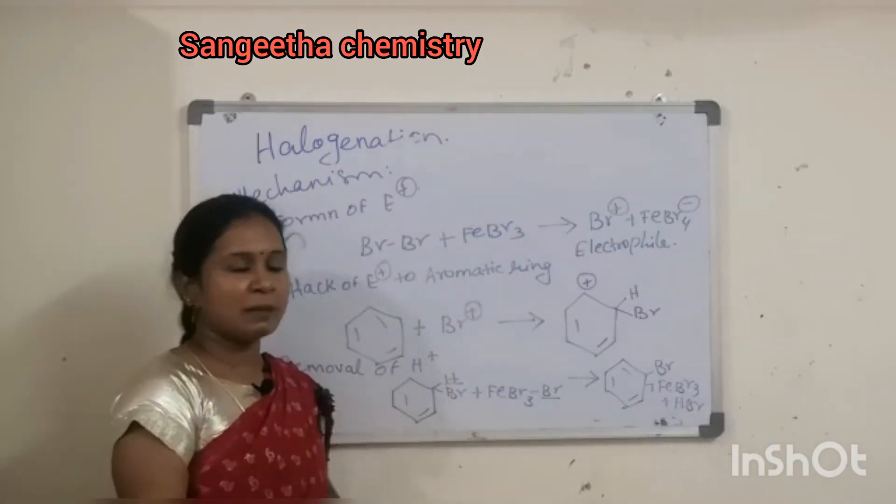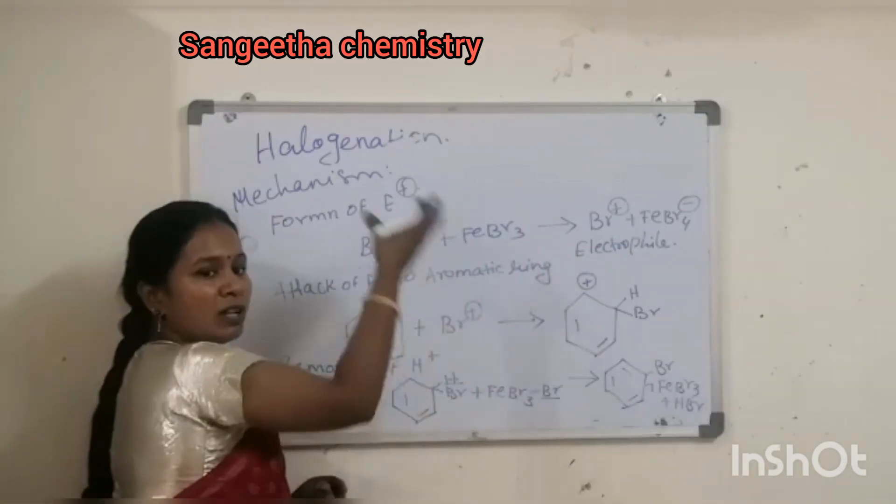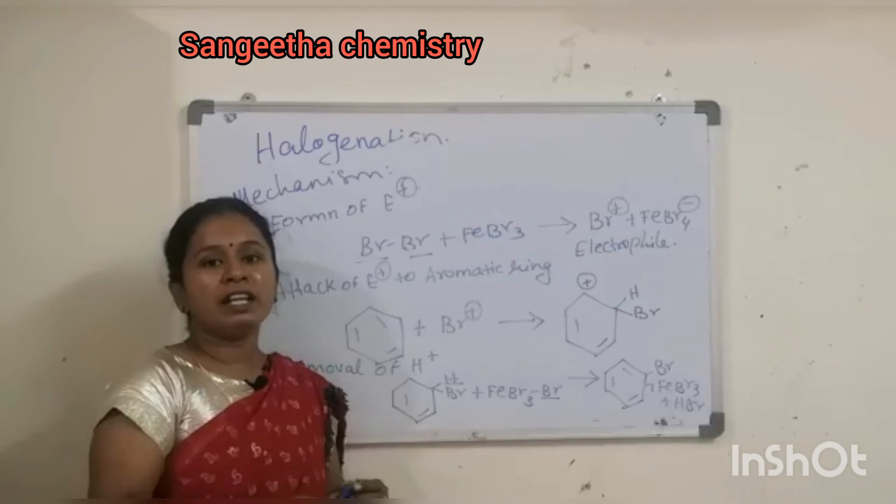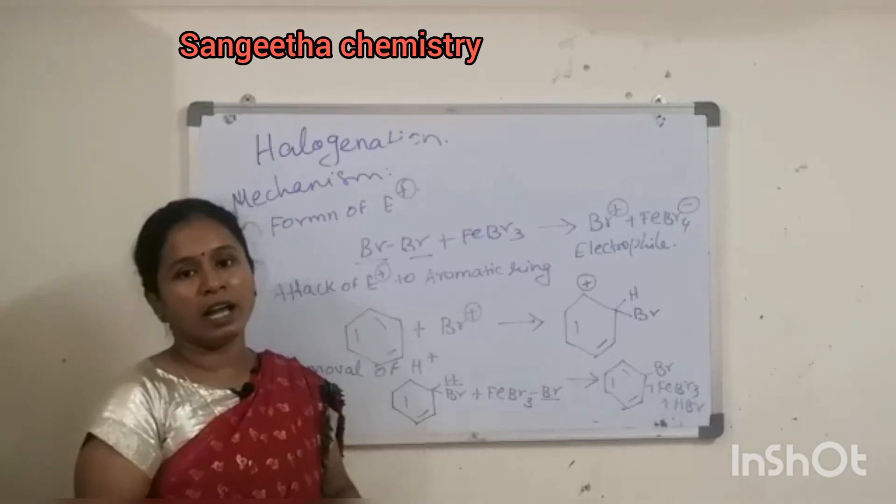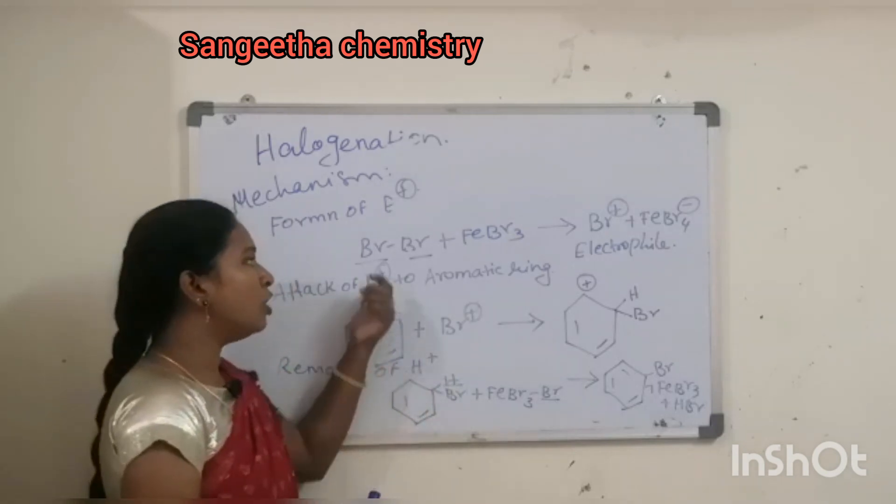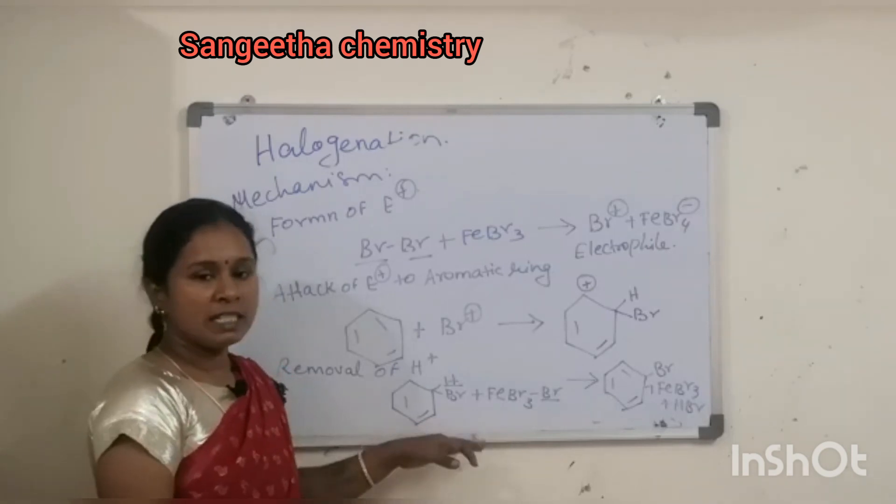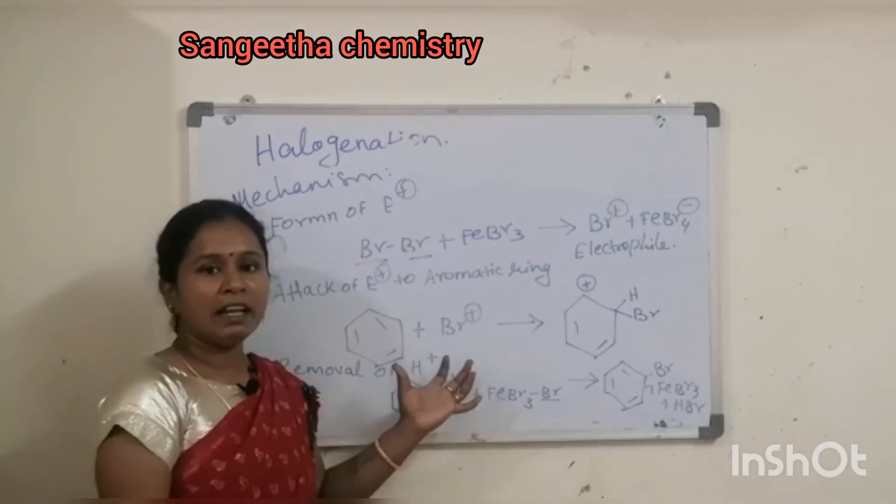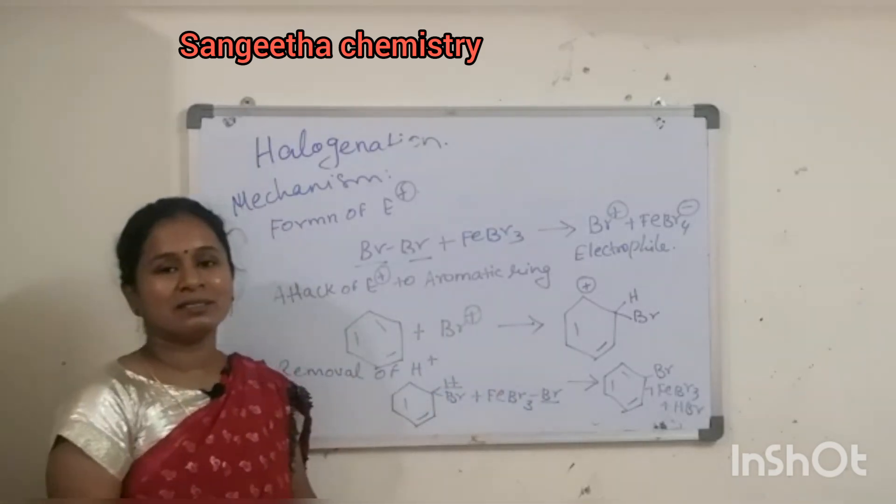Bromobenzene will be formed. This is Chlorine, we use Cl2 and FeCl3, so same mechanism but we have to change Br to Cl. Fluorination and iodination, iodination automatically spontaneously react, fluorination will be slow. Maximum halogenation of benzene, it is very simple. Benzene is going to convert into halobenzene by reacting with corresponding halogens in the presence of the Lewis acid. Thank you students.